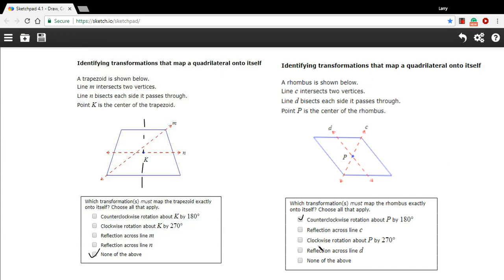And then the next choice is reflection across line c. So here's c. You want to ask yourself, do they match up? If you folded it there would it be the same thing on either side? And it looks like that is the case to me. We have these two triangles that seem to match up exactly, so I think reflection across line c does map this quadrilateral onto itself.